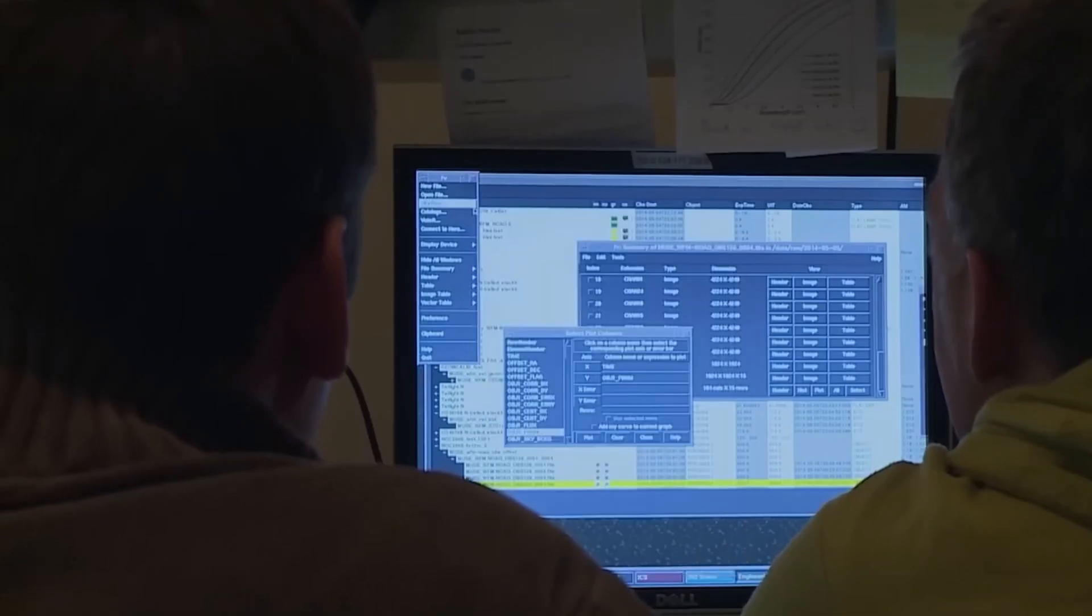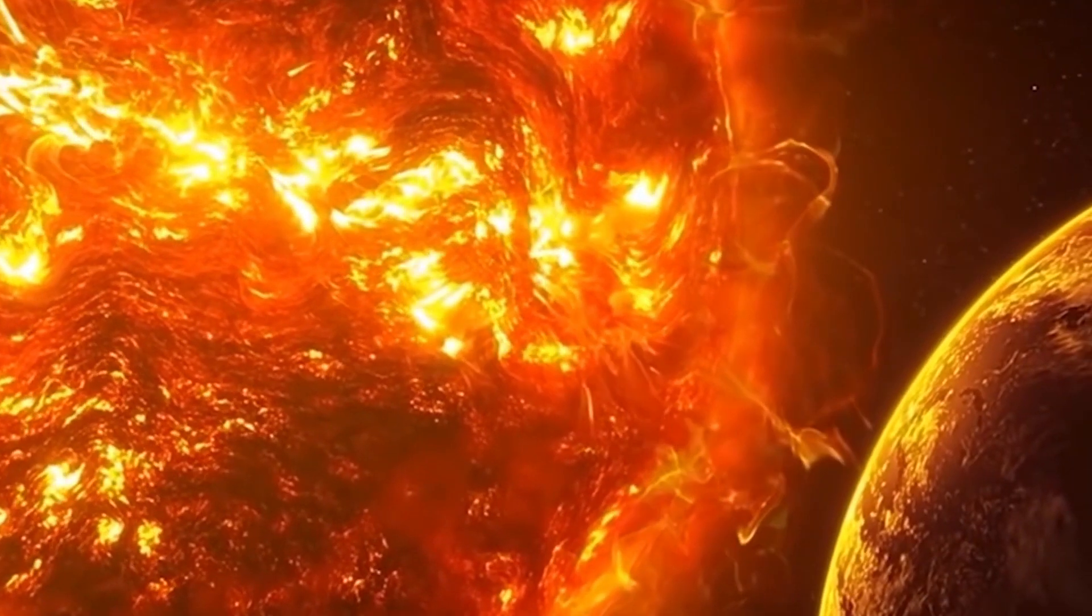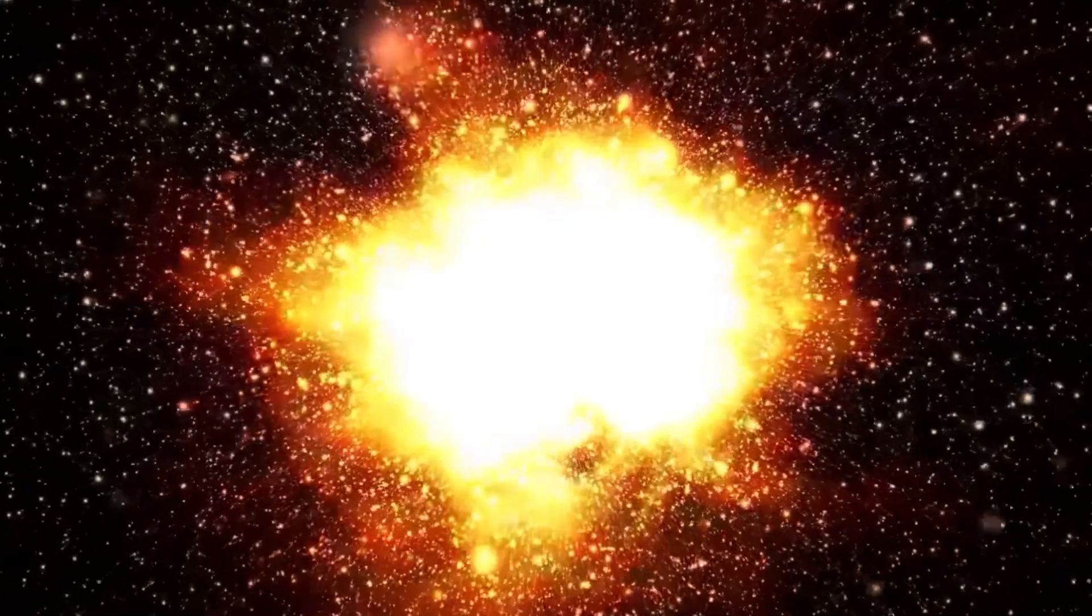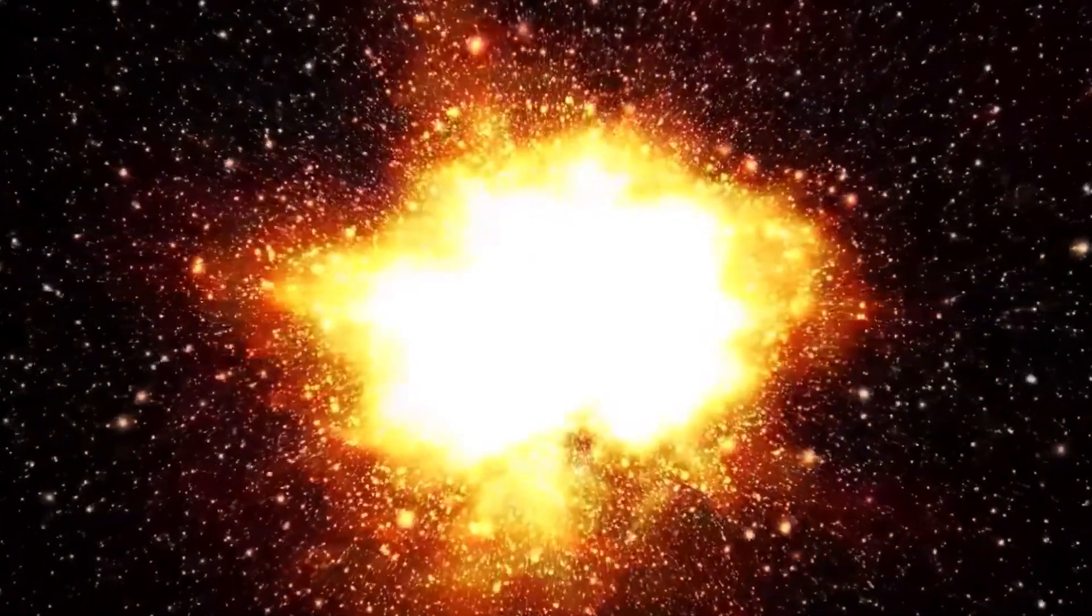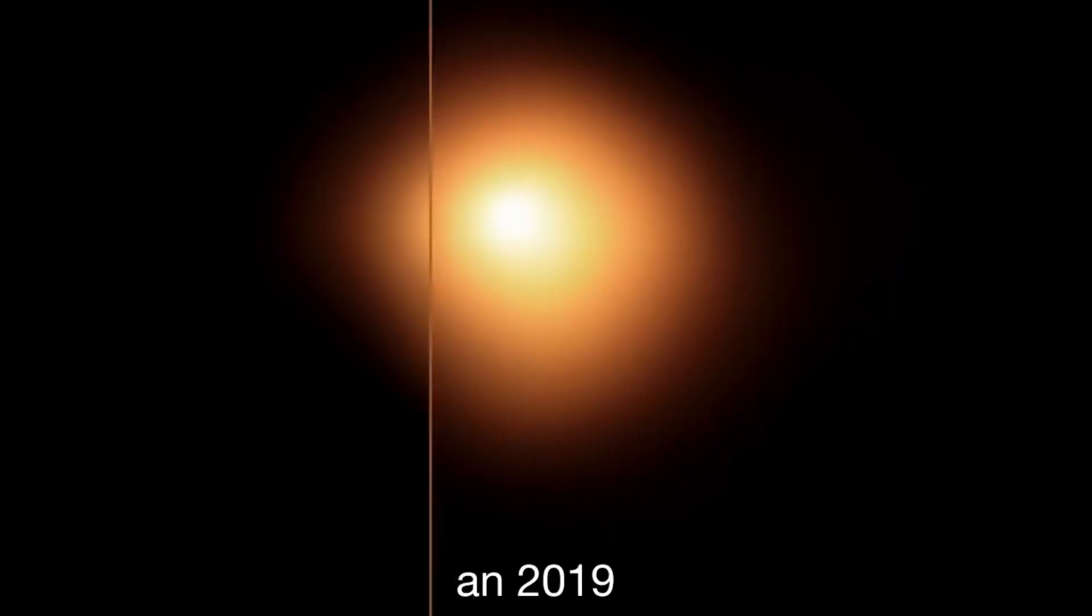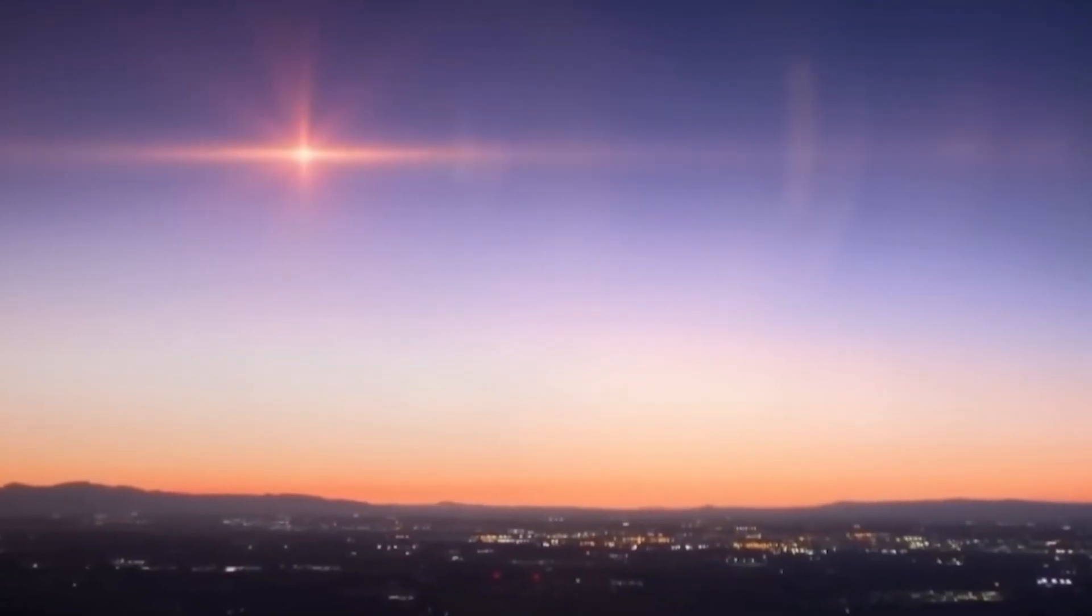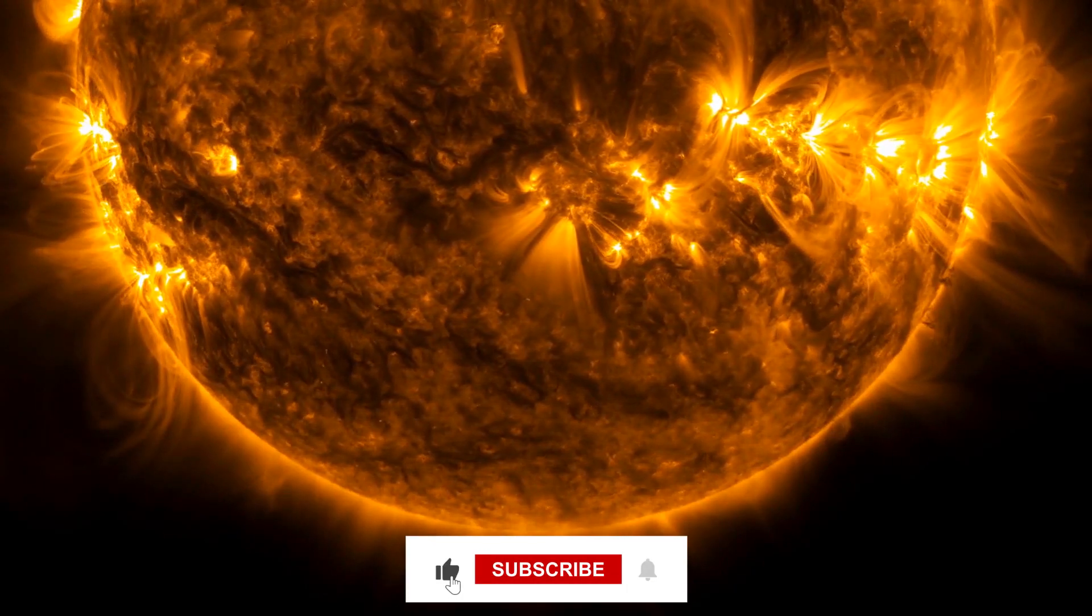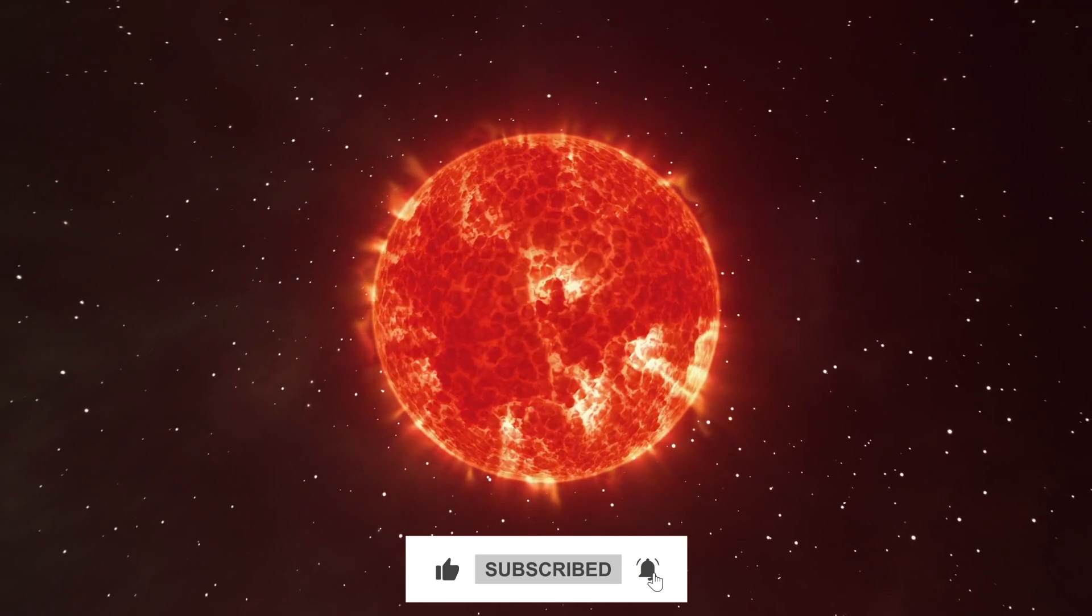However, scientists have different opinions on when Betelgeuse might go supernova. Some people believe that the cosmic event will happen very soon, while others think it might take tens of thousands of years. But based on the amount of dimming we're seeing, it's likely that the event is closer than we'd like it to be. Now, you might know a thing or two about this star, but trust me, this star has more to it than you can see. Watch this video, and you'll know exactly what I am talking about.